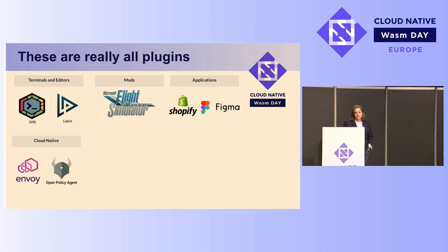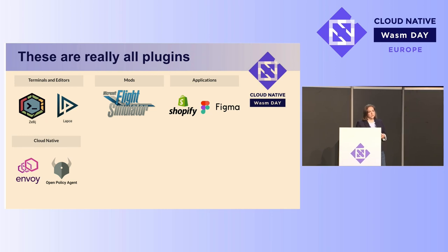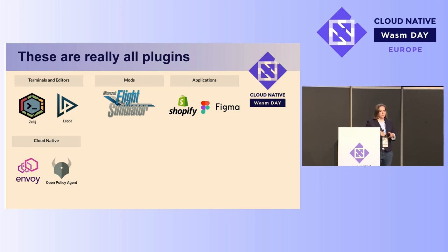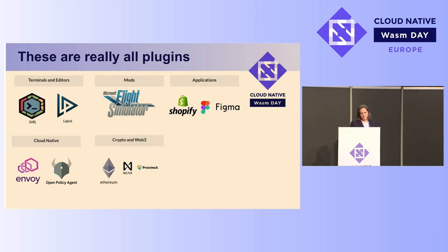We're here at CNCF, so you're probably familiar with these projects. Envoy is a sidecar proxy, and there's a CNCF project called Wasm Proxy that lets you extend Envoy to write your own HTTP filters and transformations. What I find so interesting about this case and the Open Policy Agent case — where you can write custom policies — is that we're really moving computation right next to where you need to make a decision. This is near data processing, and we get data locality as a bonus.